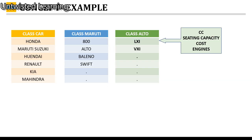Let us understand these concepts with an example. If you create a class called car, you can have multiple objects — a Honda car, Maruti Suzuki car, Hyundai car, Renault car, Kia car, or Mahindra — and this list can go on.